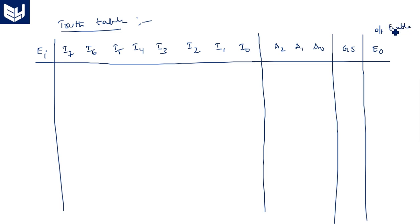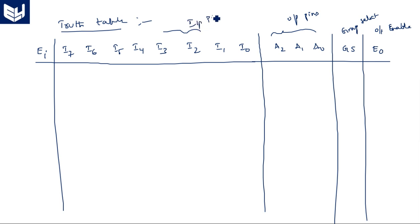Group select is activated when all the output pins are one. The enable input is active-low, so when EI is one, the chip is disabled. Irrespective of the input combinations, there is no valid output — all outputs are one, meaning deactivated or disabled.